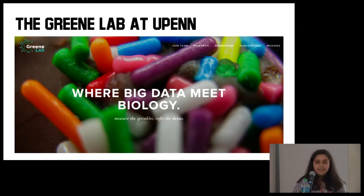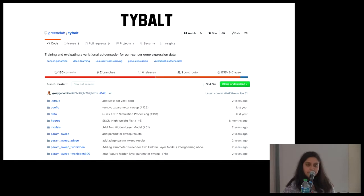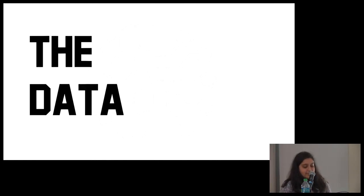So getting into the background. The Green Lab at UPenn has successfully applied variational autoencoders to a cancer data set. They published it in a paper entitled Extracting a Biologically Relevant Latent Space from Cancer's Transcriptomes with Variational Autoencoders. This paper was published in 2017. What I've done is I've recreated these results, and I've also extended them into some fun new angles. They've published all of their code in an open source database called Tybalt on GitHub. It's training and evaluating a variational autoencoder for pan-cancer gene expression data.